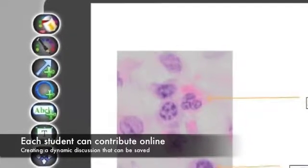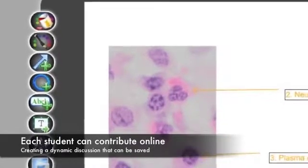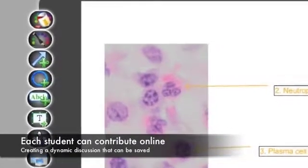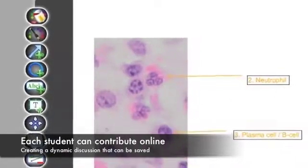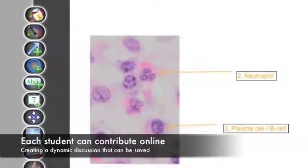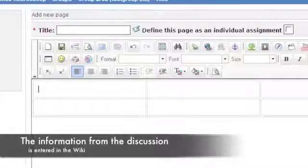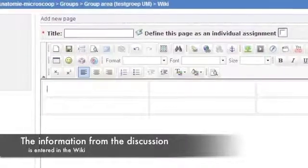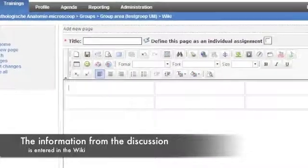The next step was that with an assignment they had to fulfill one or more questions, and they had to use the whiteboard. They saved the image on the whiteboard with the annotations and different annotation colors of the different students, and then they had to put it in a wiki. This wiki was the end part of the assignment.